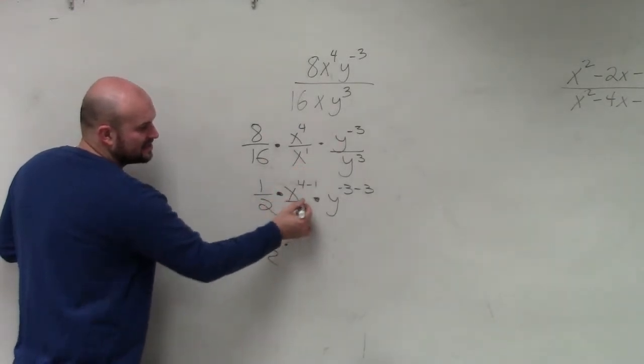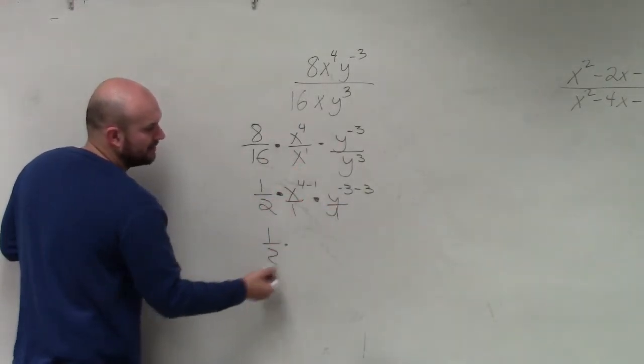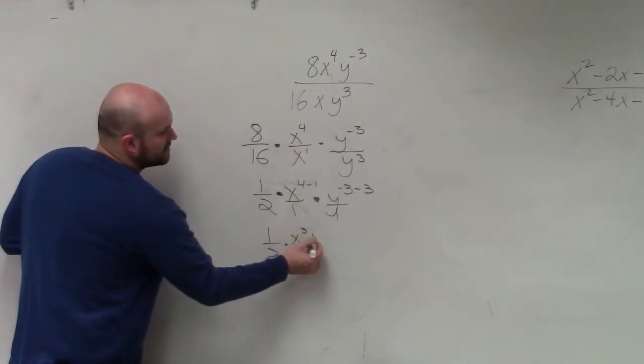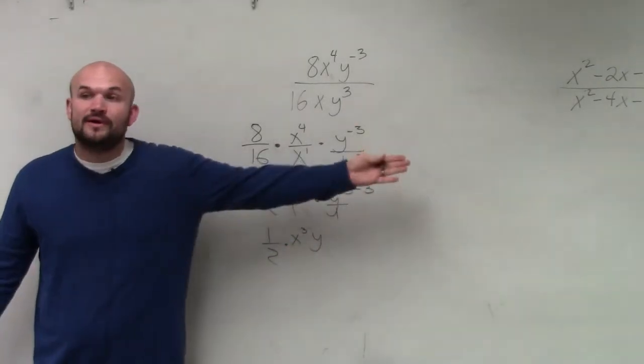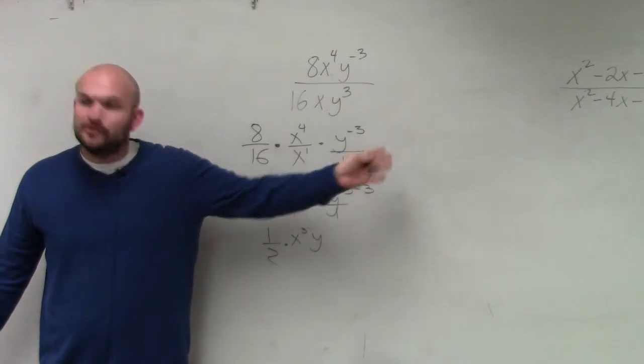So therefore, I have 1 half times. Now remember, when we're doing this, these x's are still, we put them in the numerator. So I have x to the third times y to the, you owe me $3. You borrow three more dollars. So therefore, you owe me $6.